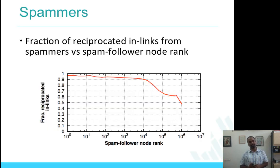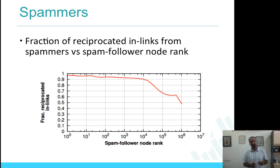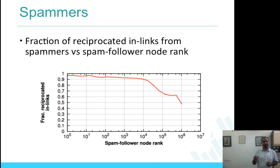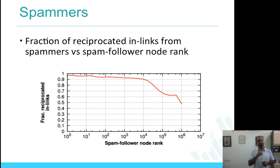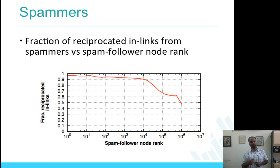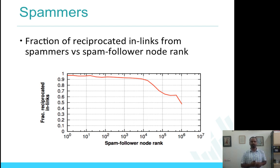If you remember last week, I showed you about what link farming is and some data about link farming. Here is a graph which has on the x-axis spam follower node rank, which is the probability that spam followers are the accounts which actually follow spam. If you remember the graph with nodes A, B, C, D, E, F — there was something as spam follower and then something as spam following. The x-axis is spam follower node rank, the rank of the account which is being a spam follower, and on the y-axis is fraction reciprocated in-links.